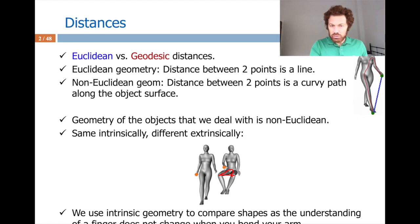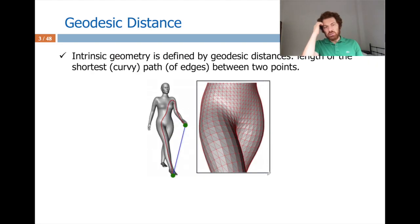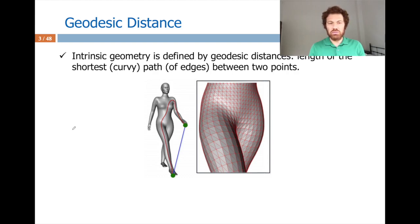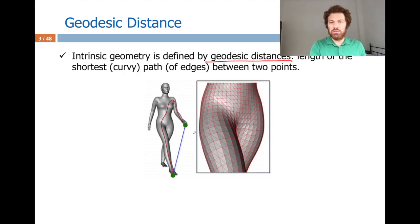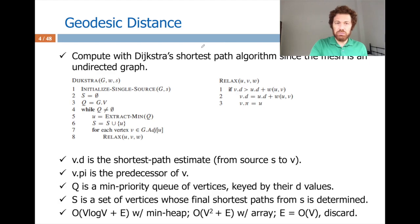These are the same points — in this case, the fingers — so even if the pose changes, that fact doesn't change. Intrinsic geometry, geometry that is invariant to bendings and other transformations, can be defined by geodesic distances, which is the length of the shortest path between two points. This path is not necessarily a flat line; it is in general a curvy path. So this reduces to a graph problem: shortest path computation.